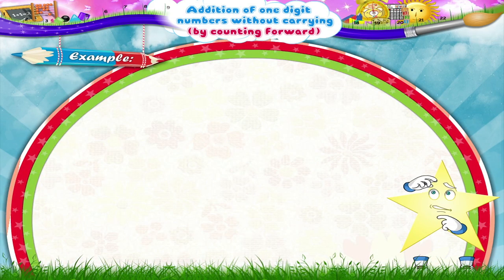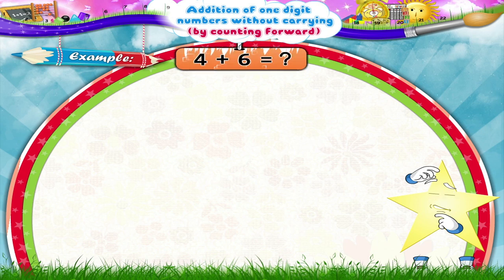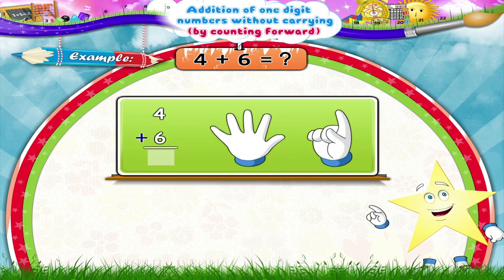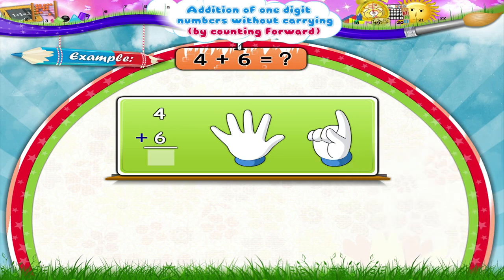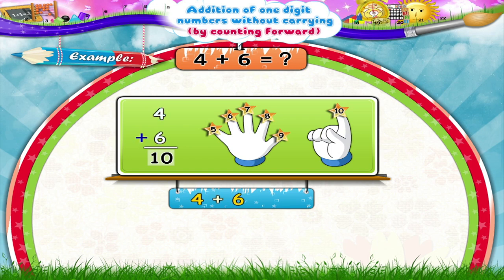Can you tell me, Stari, how much is 4 plus 6? Wait! You have to count forward, but do not draw dots or lines. Yes, Stari, we can use our fingers for counting forward. See, these are 6 fingers. Let's count the numbers after 4. 5, 6, 7, 8, 9, 10. So 4 plus 6 equals 10.